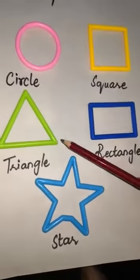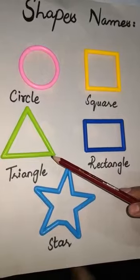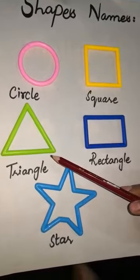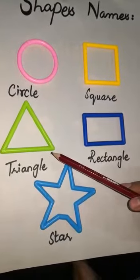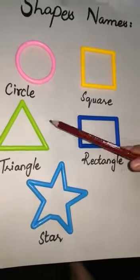This is a triangle. T R I A N G L E. Triangle. It has three sides.